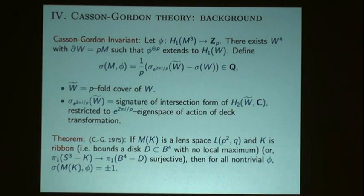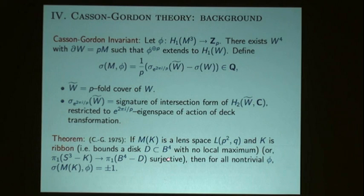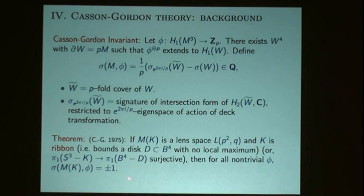The theorem Casson and Gordon proved using this invariant — for a particular example — is that if you have a knot whose two-fold cover is the lens space LP^2Q where P is prime, and K is ribbon (meaning it bounds a disc in the four-ball with no local minima, equivalently the map from knot complement to disc complement is surjective), then for any non-trivial character defined on the lens space, this invariant will be plus or minus one.